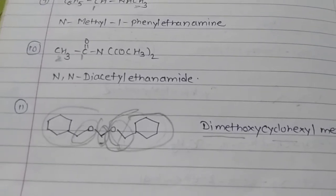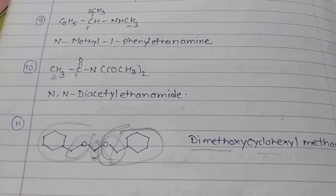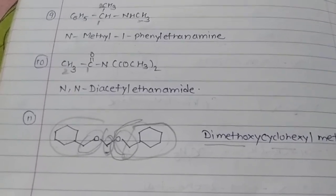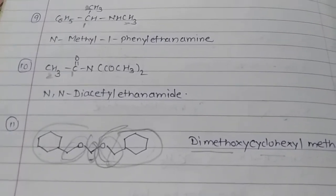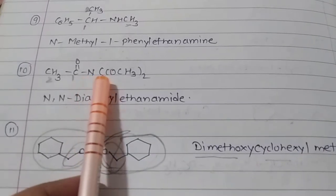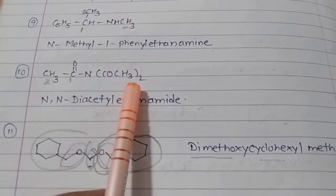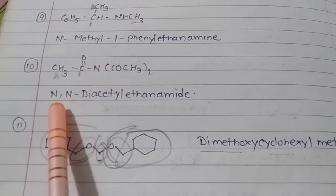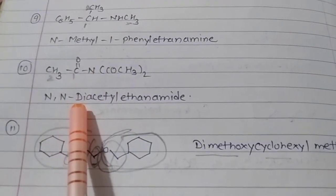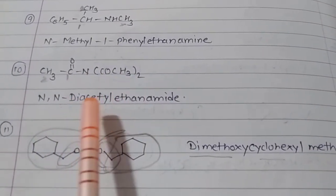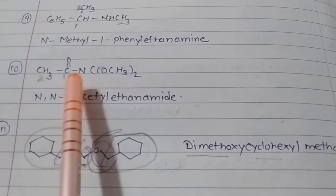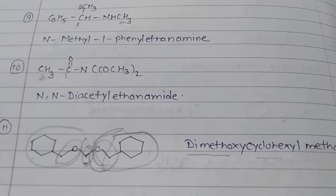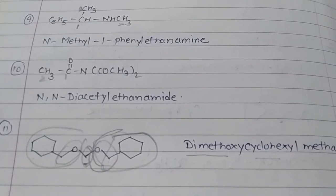The second-to-last example is an amide, a derivative of acid. Acid has four derivatives: ester, amide, acid chloride, and anhydride. This one is a tertiary amide. The hydrogens are replaced by acetyl groups — C-C-C — and this amide is tertiary, so we write N,N-. The substituents are diacetyl, and there are two carbons — therefore ethanamide. The name is N,N-diacetyl ethanamide.